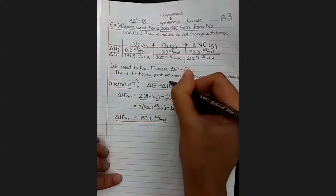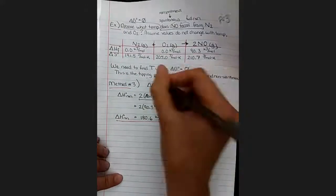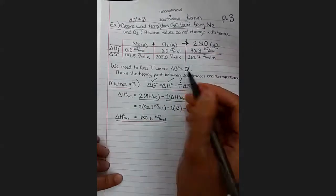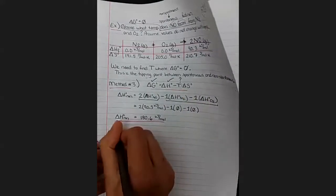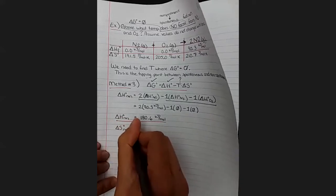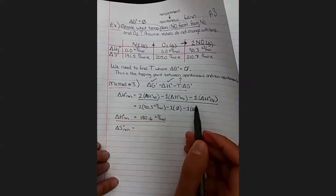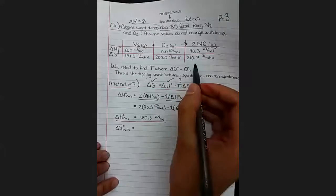All right, so we've got this number delta H. We're trying to find temperature. We know delta G naught. We're going to set that equal to zero. So next we have to find a total delta S standard for the reaction. And it's going to look like the same thing. It's going to look like products minus reactants. We're just going to use a different line from our table here.